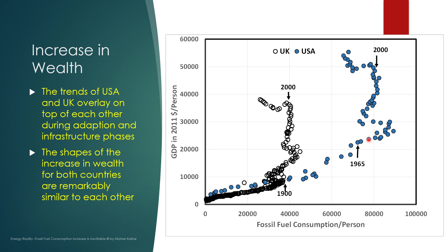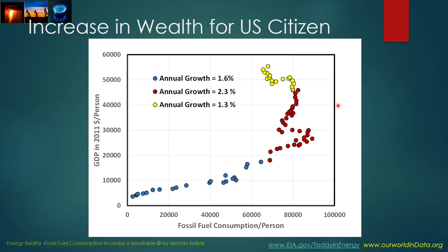This increased rapidly over 35 years. And then in the efficiency period, the fossil fuel consumption declines but GDP continues to rise. If you divide the overall growth of GDP per person in the United States, you can clearly see three periods: the infrastructure period, where annual growth is relatively small at about 1.6 percent because a lot of money is spent building infrastructure; then the growth period, where effective use of fossil fuel is found by a large population, resulting in annual growth of 2.3 percent; and then eventually the growth rate slows as we go into the efficiency period.